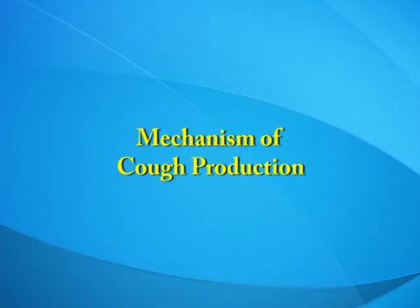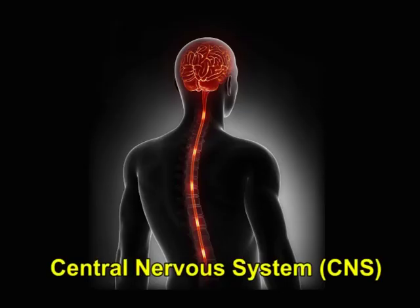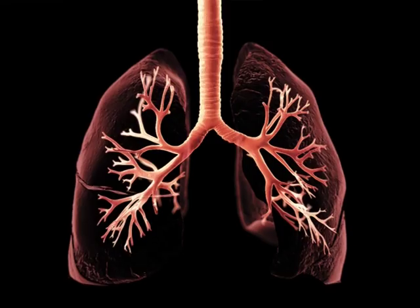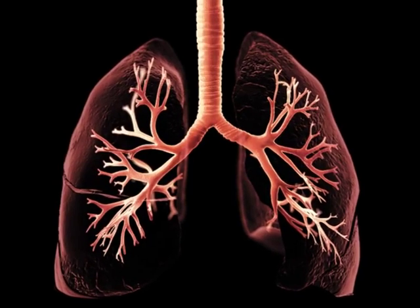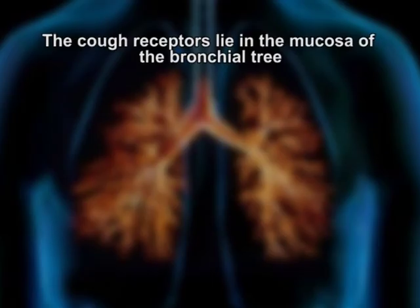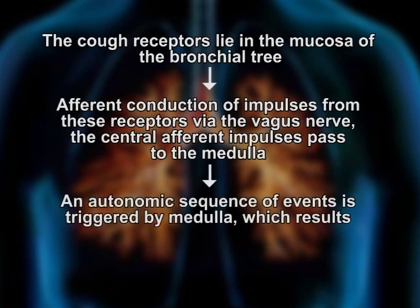Mechanism of Cough Production. The cough reflex is a complex phenomenon involving the central nervous system (CNS), peripheral nervous system (PNS), and smooth muscles of the bronchial tree. It involves the following events: the cough receptors lie in the mucosa of the bronchial tree; afferent conduction of impulses from these receptors via the vagus nerve; the central afferent impulses pass to the medulla; then an autonomic sequence of events is triggered by the medulla, which results in cough.